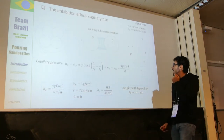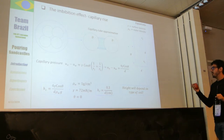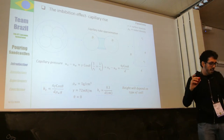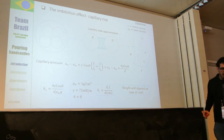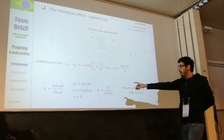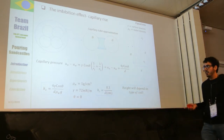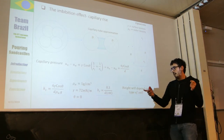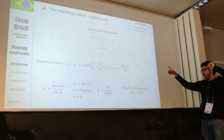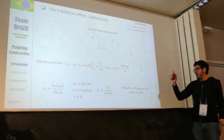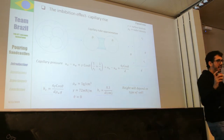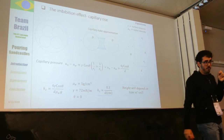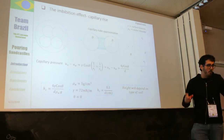Now considering a capillary rise, a simpler explanation is to take the important parameters and find the height at which the water can actually go up. Taking this equation and considering some values for water, we can reach a critical size. Considering theta in our capillary tube approximation as almost zero, we reach this equation, which tells us exactly what is important to our problem: the size of the grain will be important. This is why in our experimental analysis we will focus on that.